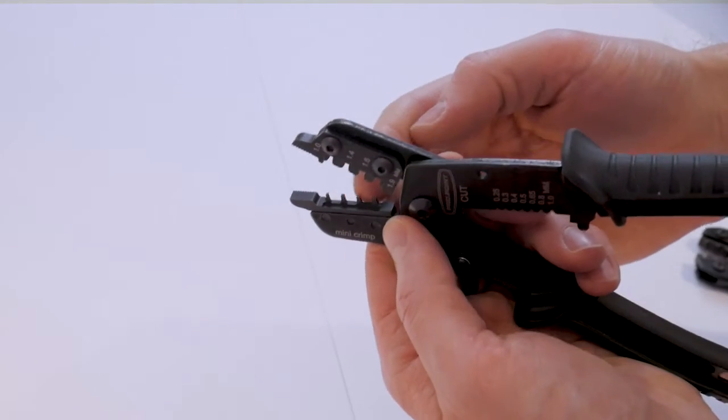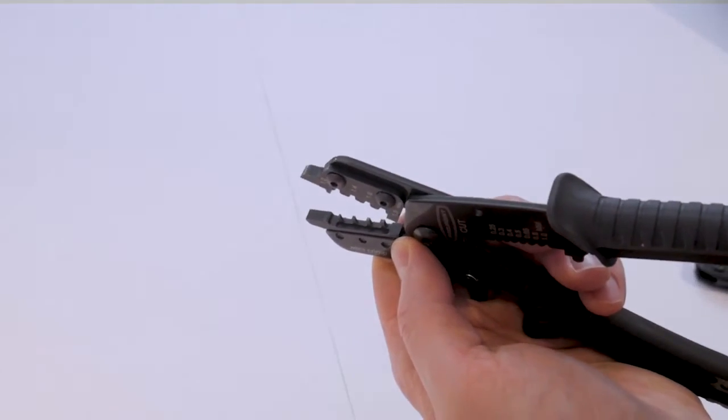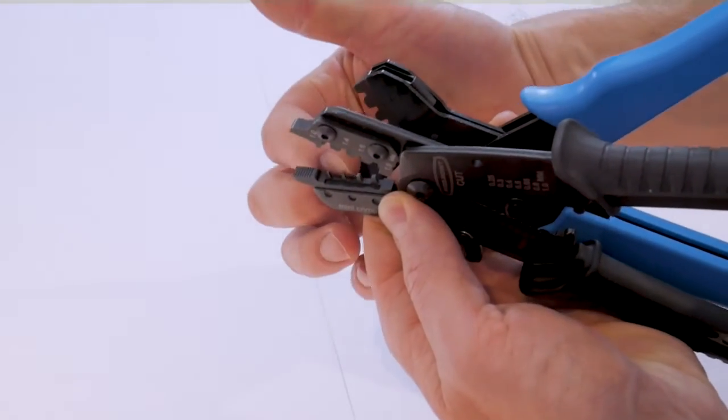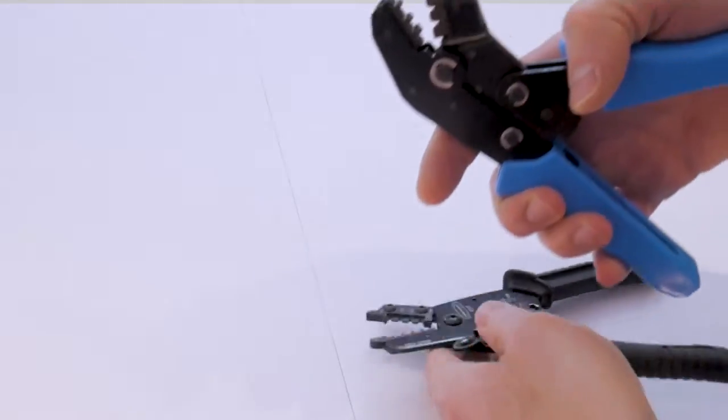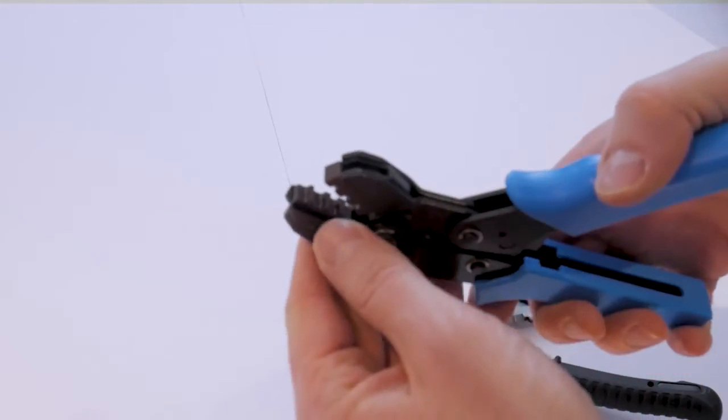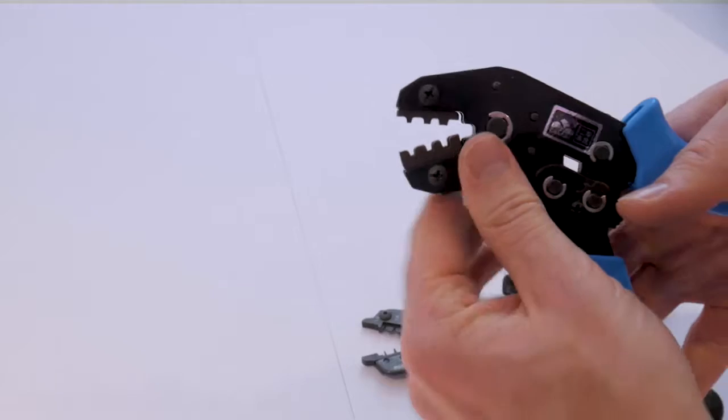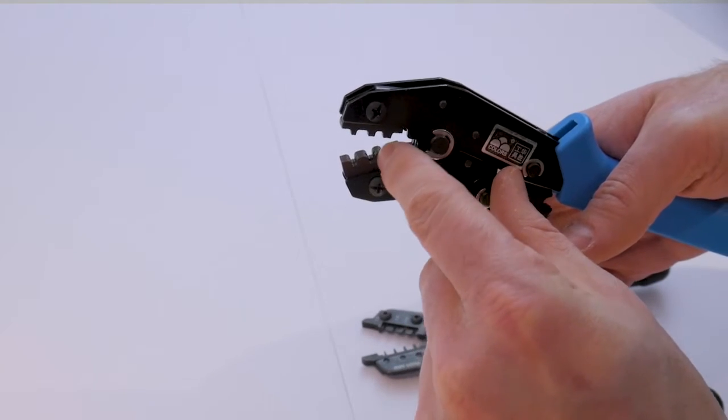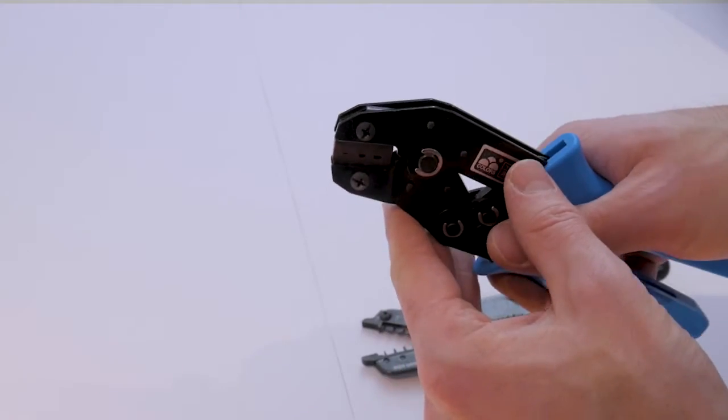Looking at the cross section of the die, comparing it to the ratcheting style die, you'll notice that this one here is a lot thinner. And that is because the ratcheting style crimper is supposed to crimp the section that crimps down on the wire insulator as well as the bare wire at the same time.